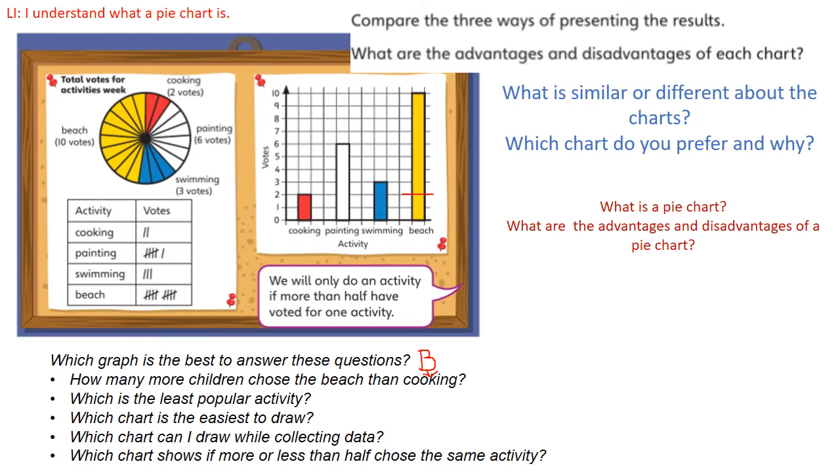The next question said which is the least popular activity? Which graph shows us that the best? I think this time it's probably the tally chart that shows us the best, because we can see here easily that that has two votes, although the bar graph is quite simple to use as is the pie chart. Which chart is easiest to draw? What do you think? Probably not the pie chart because we've got to draw a circle.